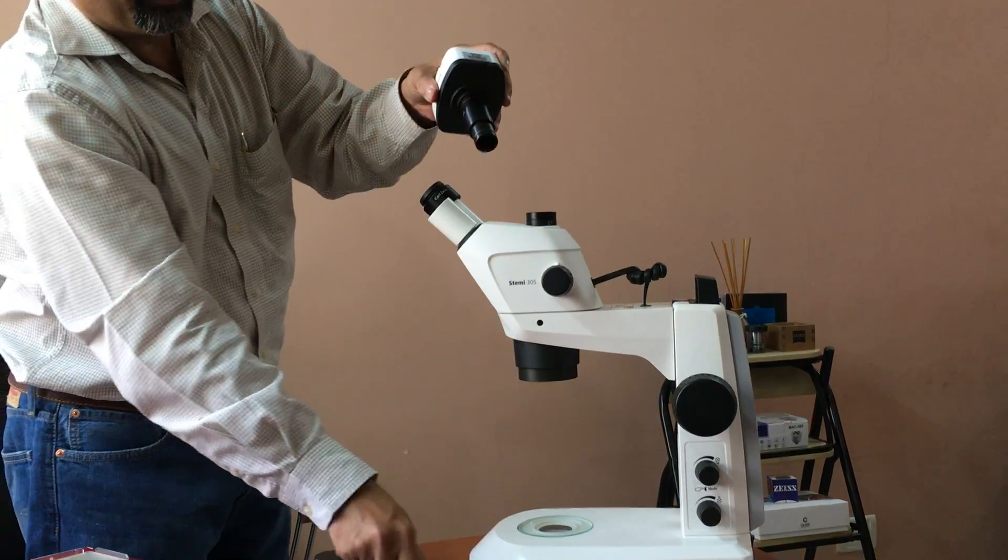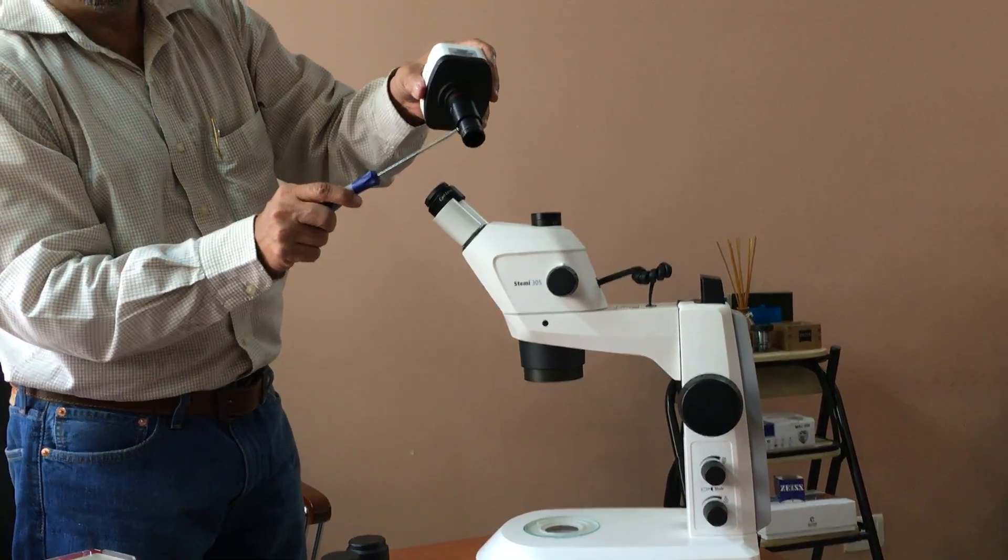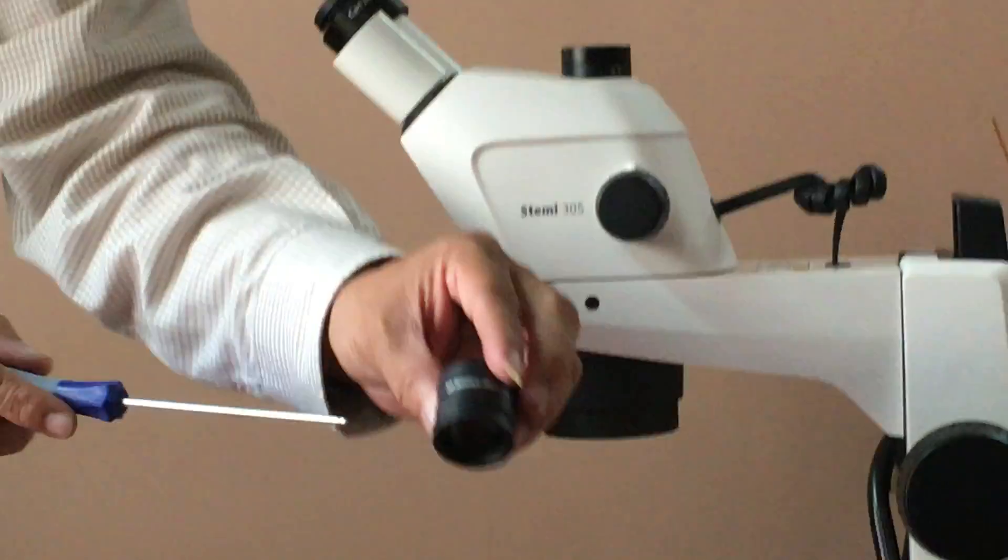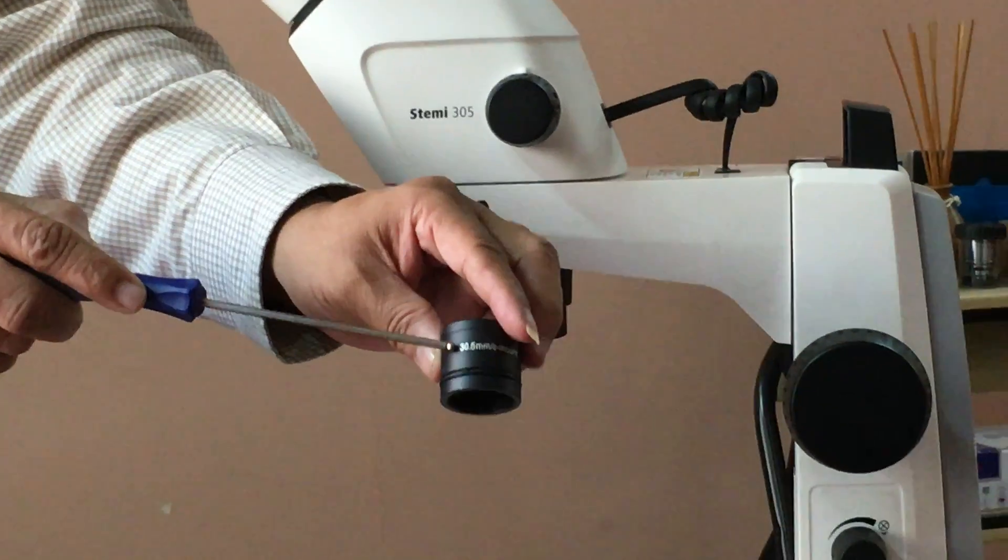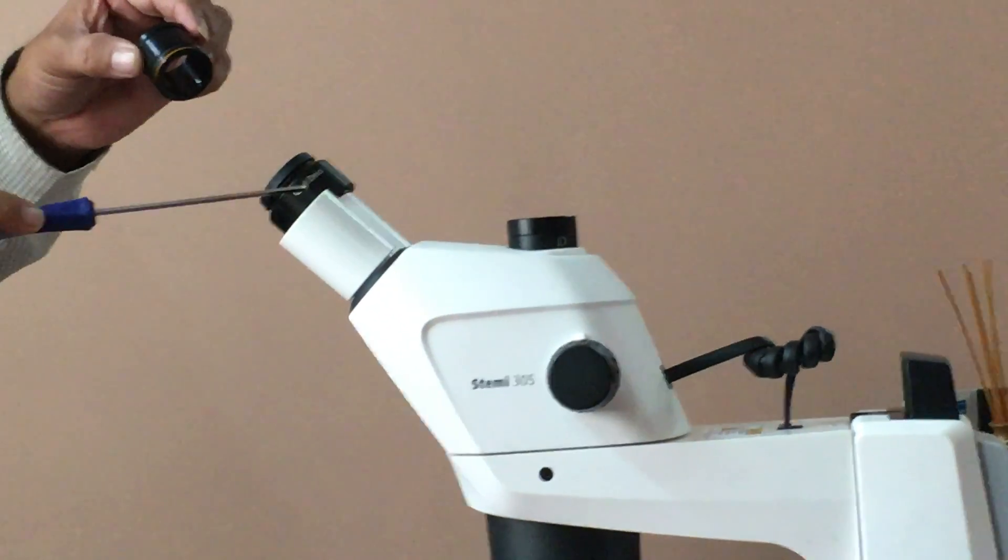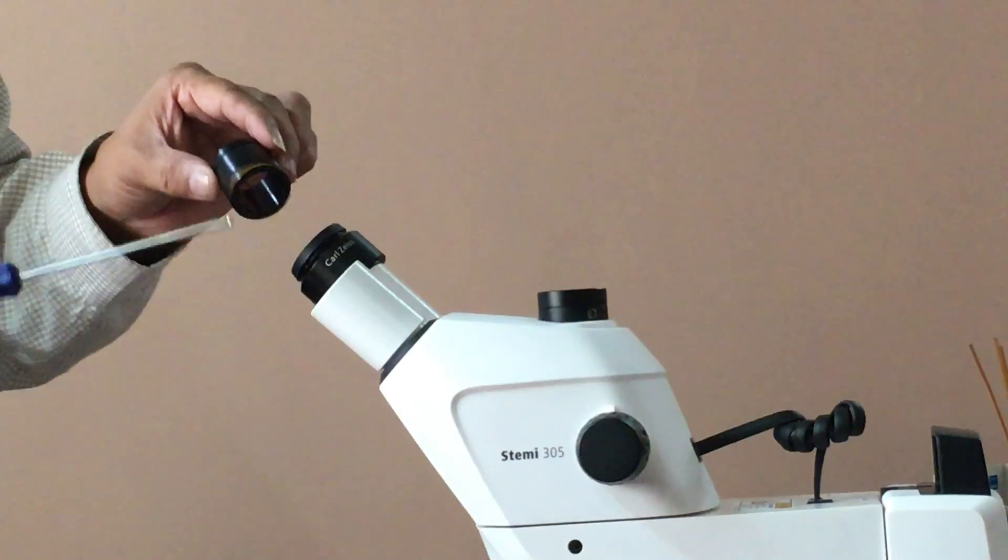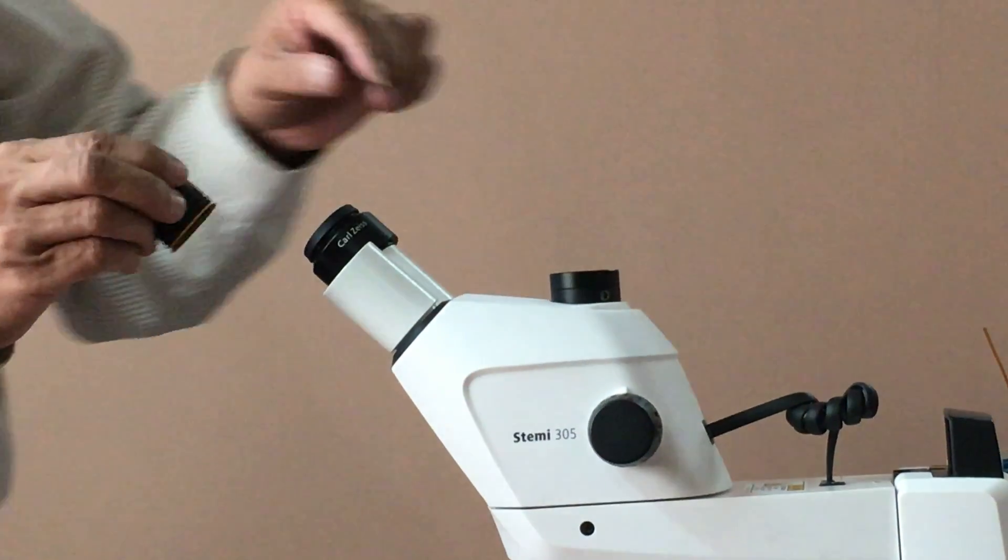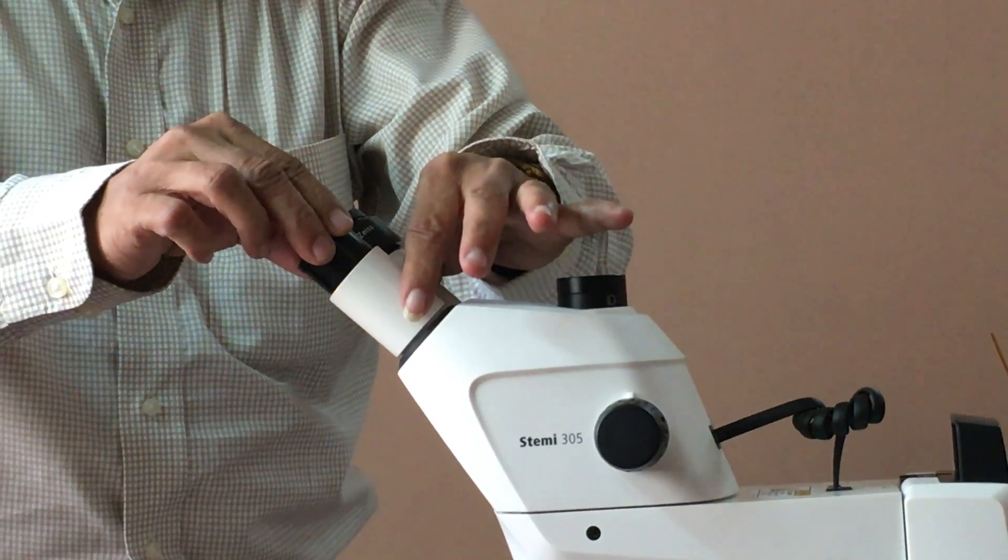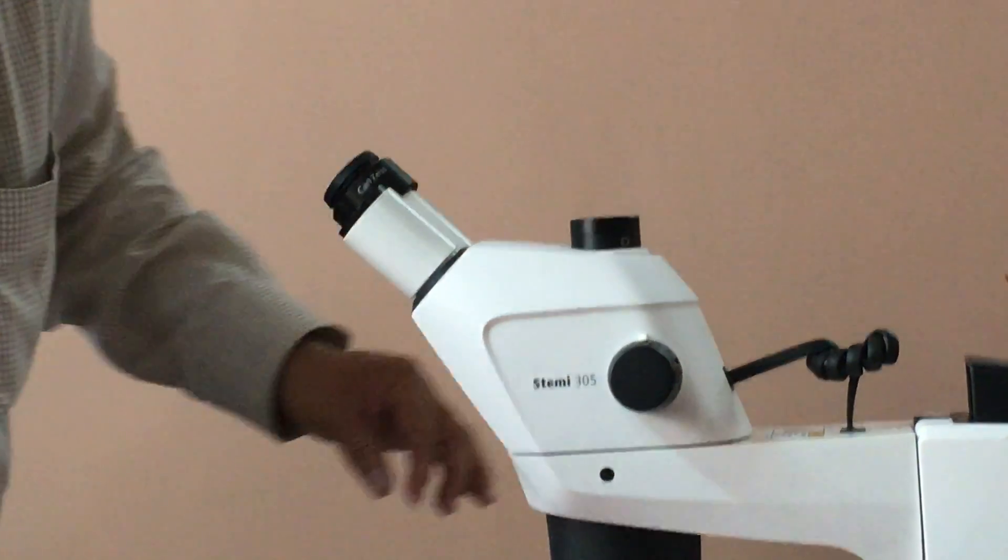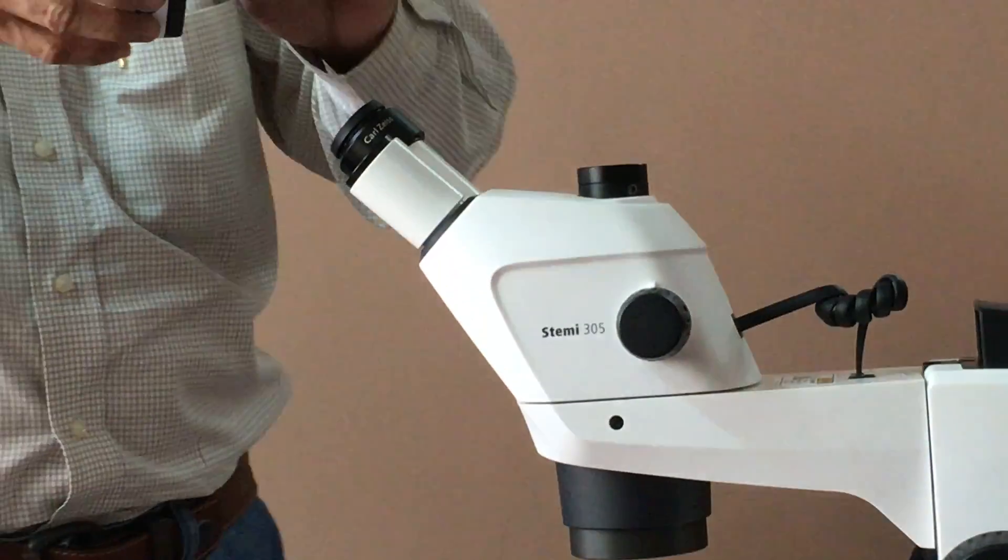This diameter is 23.2 mm and we have spacer rings available. This is 30.5 mm and the yellow ring is 30 mm. The Kalzai microscope ID, eyepiece ID is 30 mm. So we use the yellow ring. We insert the ring and then insert the camera.